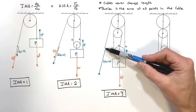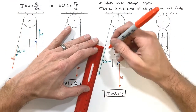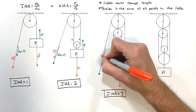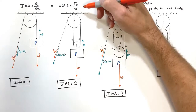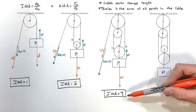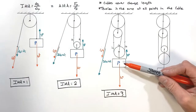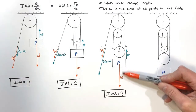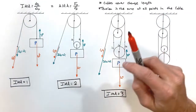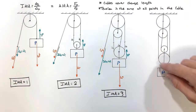With an IMA of three, the input distance is three times greater than the output distance. The trade-off is the input force is significantly smaller — one third of the output force. So if we're trying to lift 100 pounds of load, it would only require 33.3 pounds of input force, assuming no friction in the system, which is what we're assuming here.